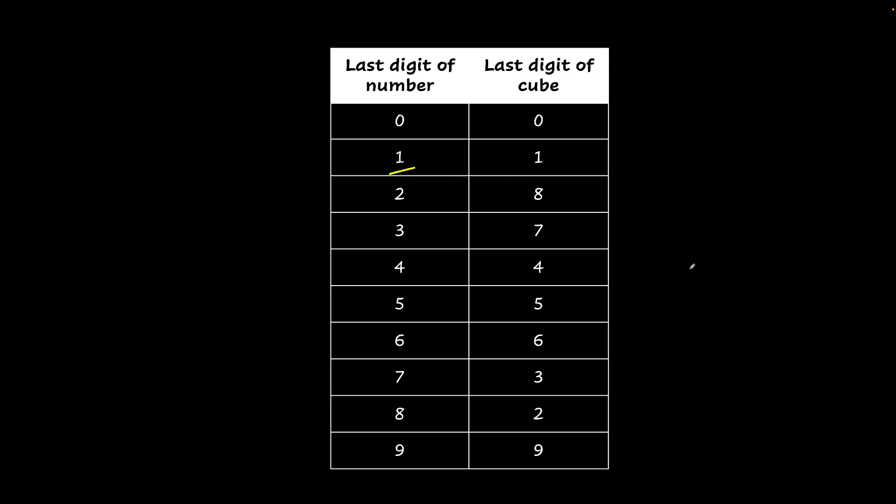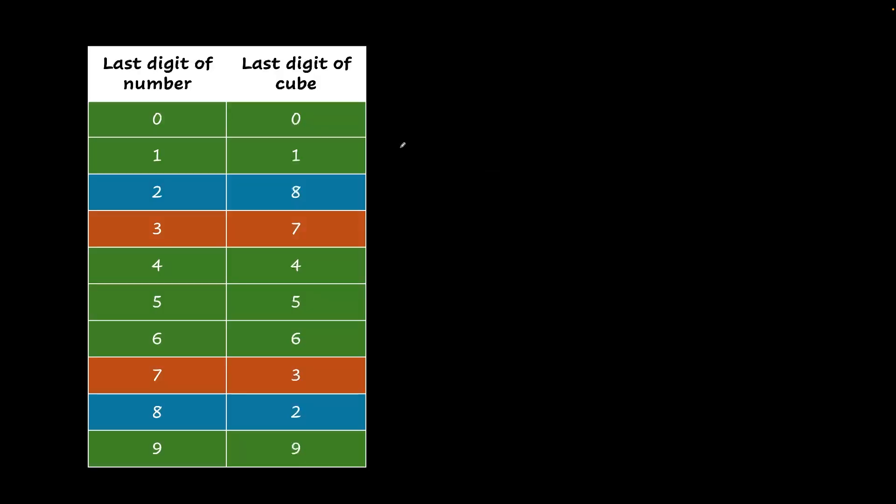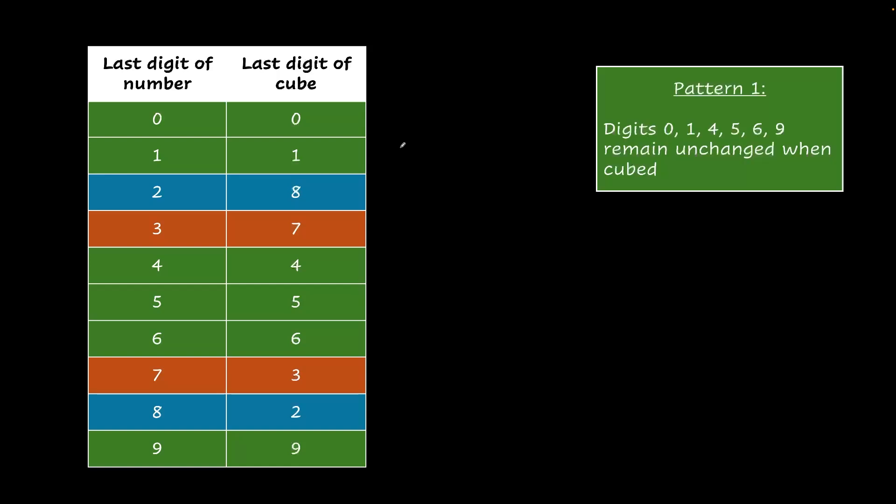But do you need to memorize this? I have a simpler way for you. It turns out that we have a further easier pattern to understand. So the first pattern is digits 0, 1, 4, 5, 6 and 9 remain unchanged when cubed. So 0 remains as 0, 1 remains as 1, 4 remains as 4, 5 remains as 5, 6 remains as 6 and 9 remains as 9.